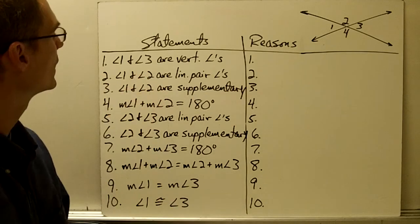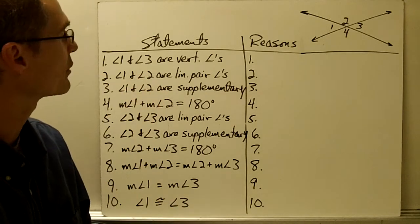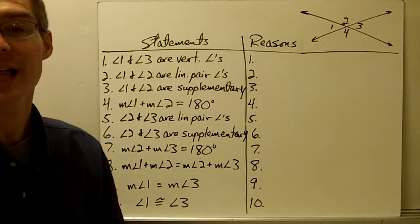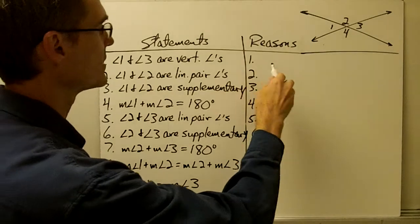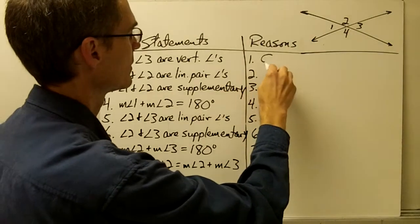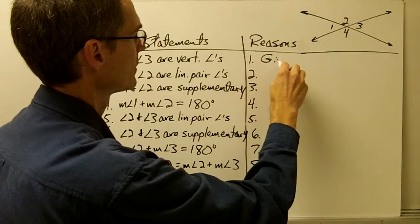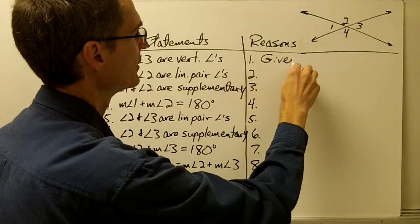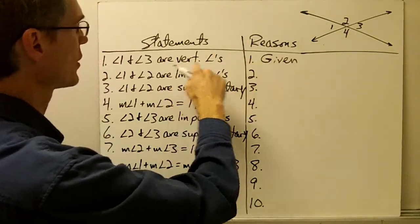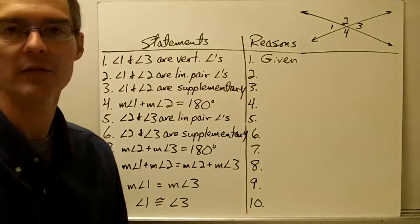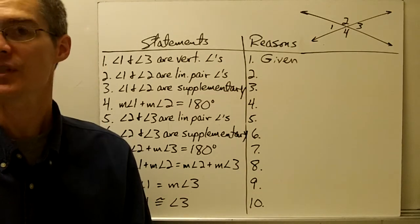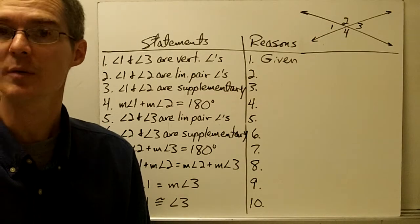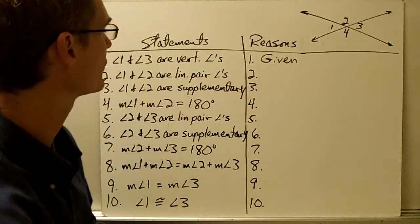Statement number 1: angle 1 and angle 3 are vertical angles. This is given information. The reason here is 'given.' Almost all the time, the very first statement in a proof is going to be given information.